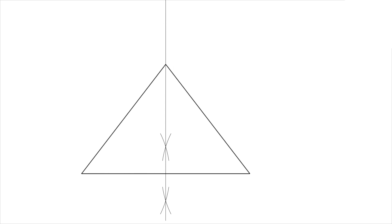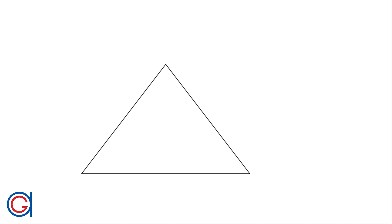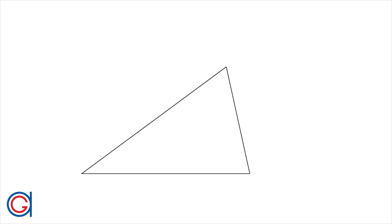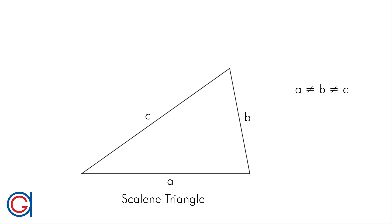So to continue, the last type of triangle named according to its sides is the scalene triangle, which has 3 unequal sides and therefore 3 different angles.